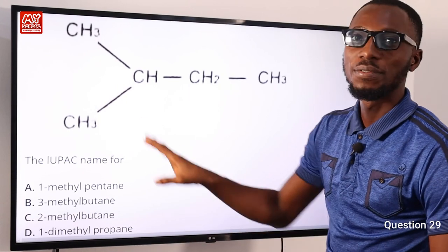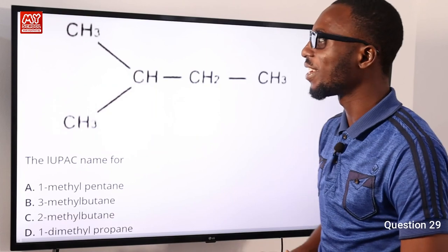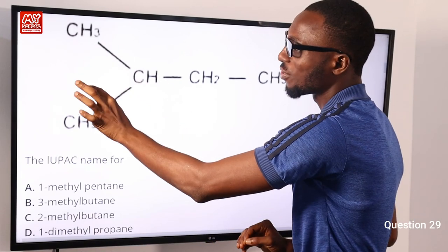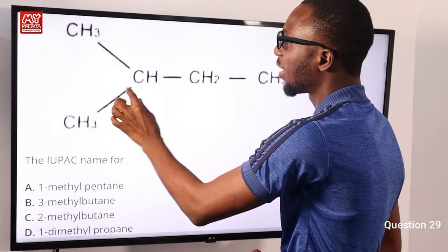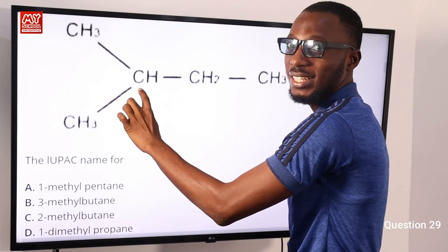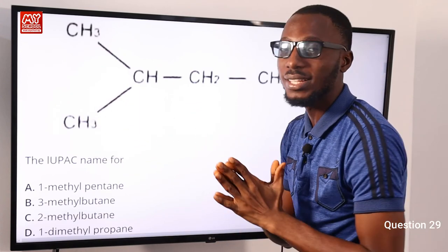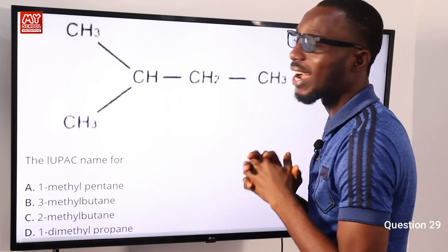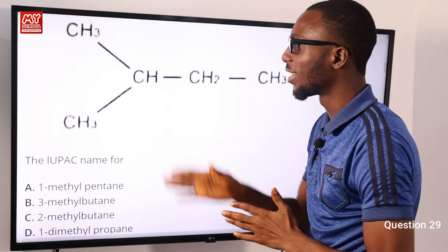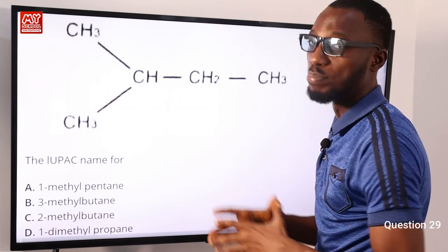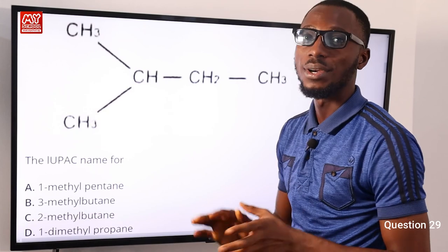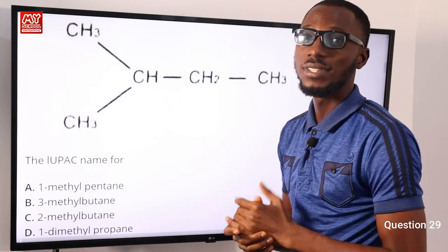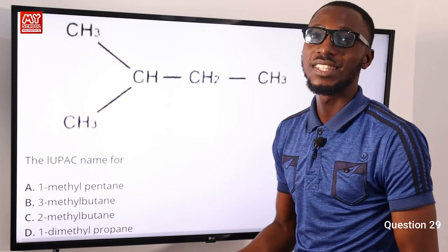Question 29. The IUPAC name for this hydrocarbon structure. If you straighten the chain mentally, you have CH₃–CH with a branch underneath at the second carbon. Counting the longest carbon chain: one, two, three, four — that is butane. The methyl group is attached to the second carbon, making it 2-methylbutane. The correct option is C. 2-methylbutane has a molar mass of 72.15 g/mol and a density of 616 kg/m³.